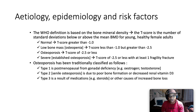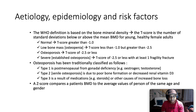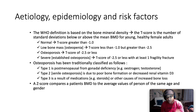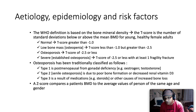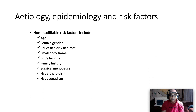In comparison to the T-score, the Z-score compares a patient's bone mineral density to average values of a person of the same age and gender, whereas the T-score refers to standard deviations compared to a young healthy female adult. Non-modifiable risk factors for osteoporosis include age, female gender, Caucasian or Asian race, small body frame, family history, surgical menopause, hyperthyroidism, and hypogonadism.